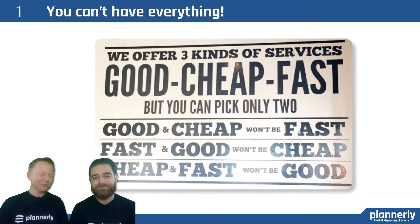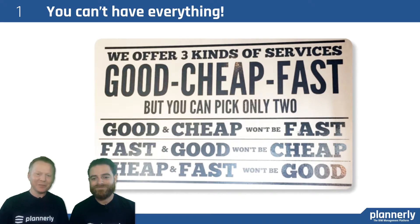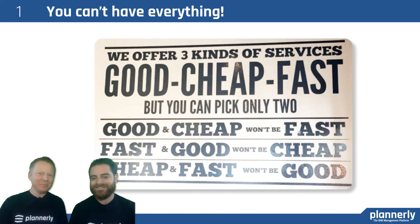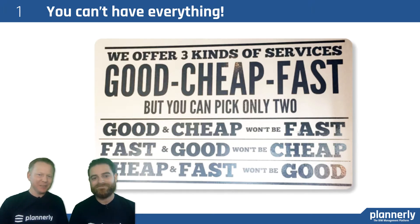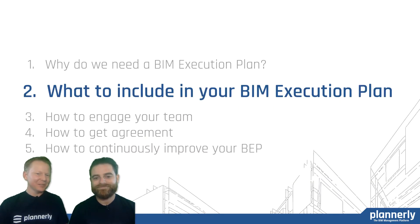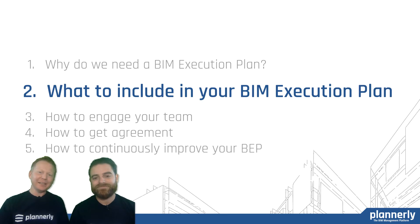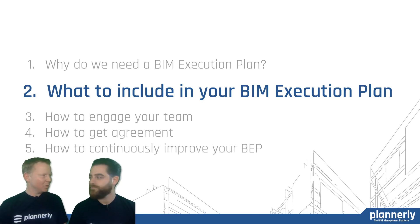So you can't have all three. I think a lot of people know this: good, fast, and cheap — you can pick two. You can have good and cheap but not fast. You can have fast and good but not cheap. And you can have cheap and fast but not good. That's why we need an execution plan — in order to be able to align expectations.